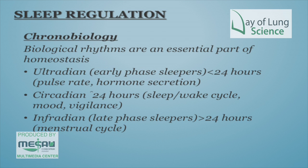Sleep regulation: we roughly have a 24-hour body clock. You can get early phase sleepers — the early risers who go to sleep early and get up early. Then there are late phase sleepers who have a slightly greater than 24-hour clock, so they want to go to bed a little later and get up a little later. Most people should have a circadian rhythm of around 24 hours.